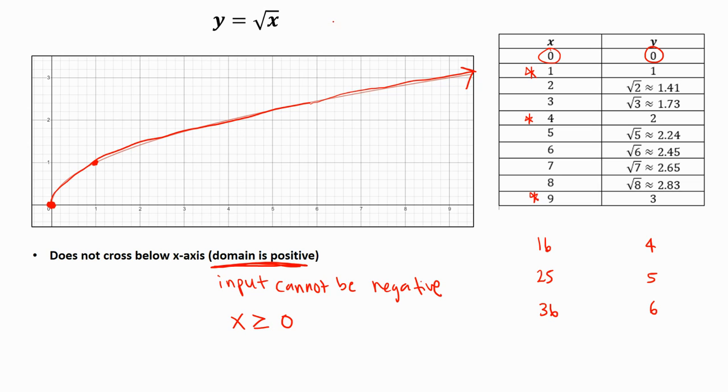If we plug in negative numbers, say if we plug in x equals square root of negative 1, this is not a real number. Maybe in a math class you will study imaginary numbers. This is actually equal to i. We won't study that in this class but maybe you will in a different math class.